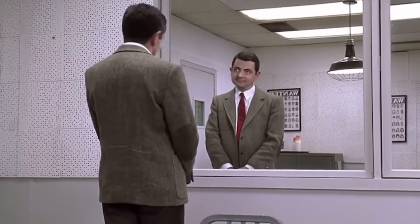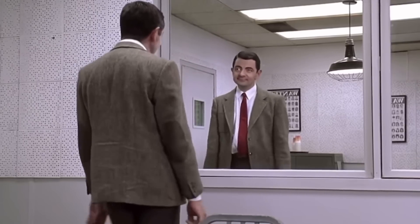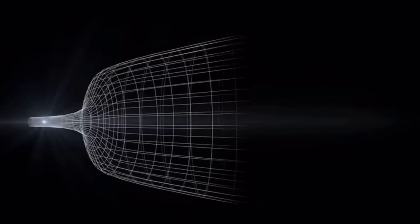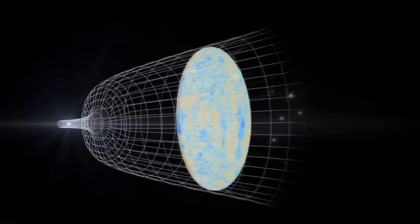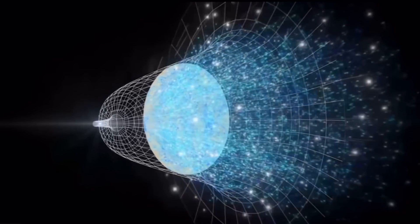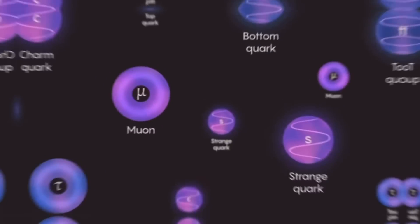The antimatter particles should, in principle, be perfect mirror images of their normal companions, cancelling each other out. Somehow though, we were left with a surplus of matter over antimatter.